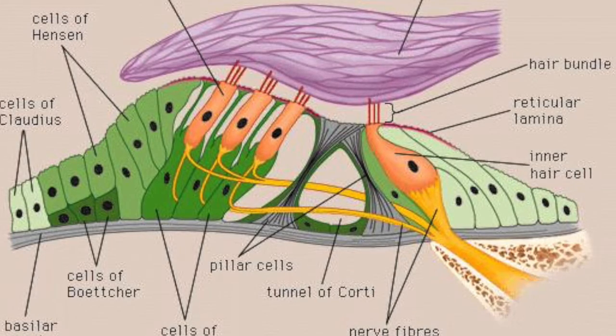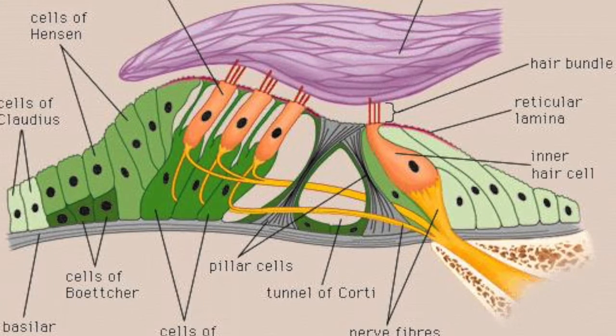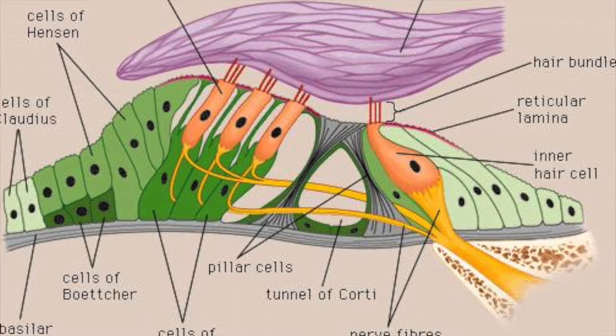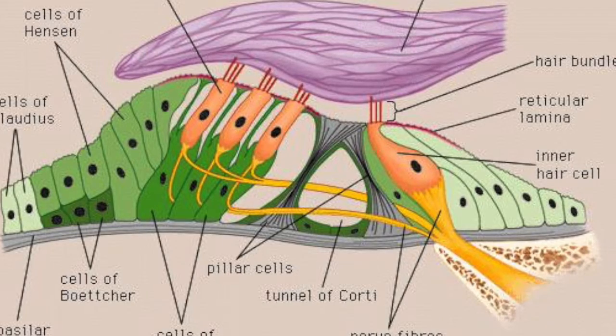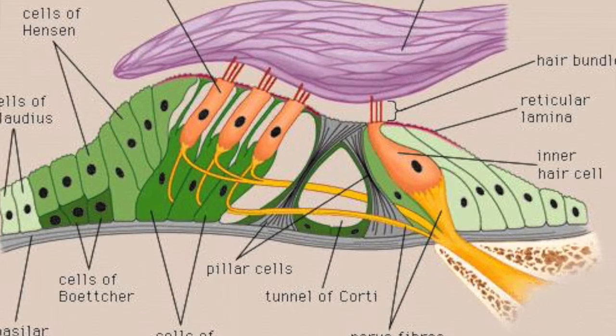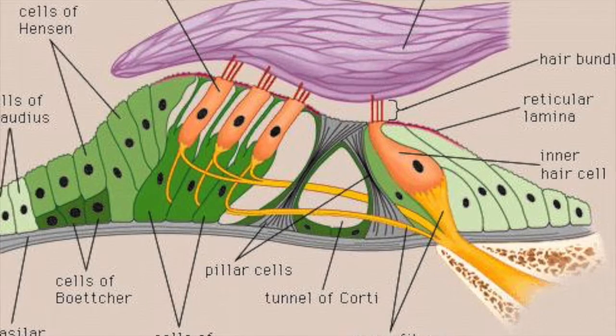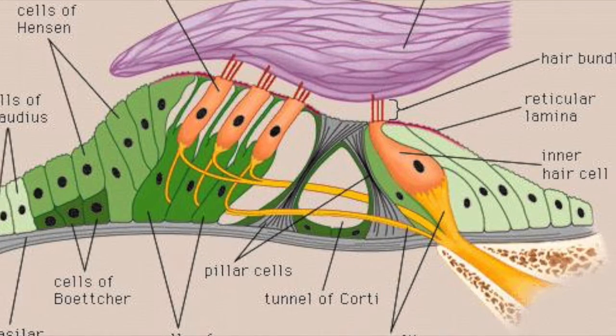Some important landmarks are the tectorial membrane, Corti's tunnel, inner hair cells, and outer hair cells. The sound starts with the fluid displacement of the scala vestibuli, causing Reissner's membrane to shift. Once Reissner's membrane moves, the signal is sent through the endolymph in the cochlear duct and all the way through to the basilar membrane.